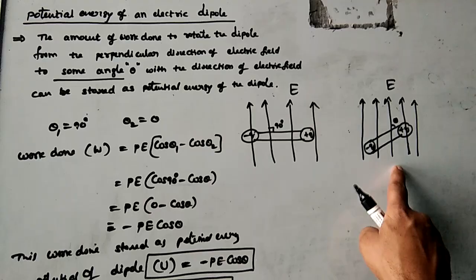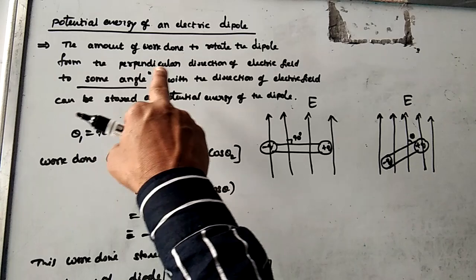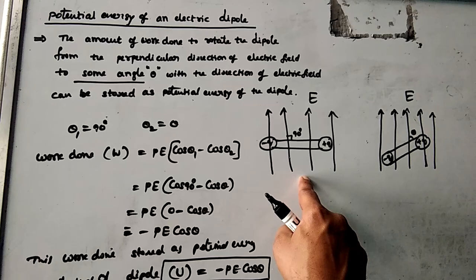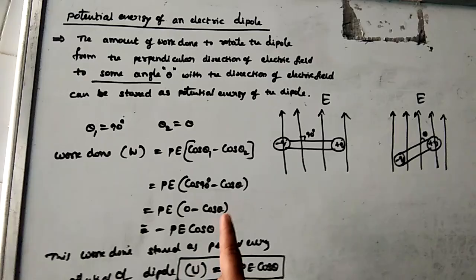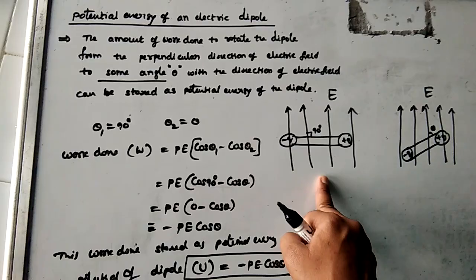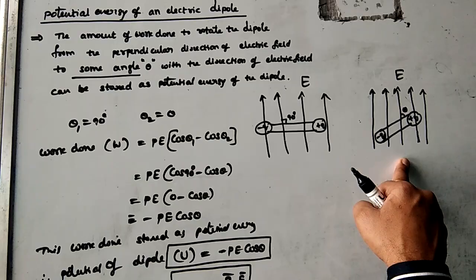From this position to this position we have to do some work. That amount of work done to rotate the dipole from the perpendicular direction of the electric field to some angle theta with the direction of the electric field — this amount of work done will be stored as potential energy. So from perpendicular direction to some angle theta, we have to do some work, and that work done will be stored as potential energy.